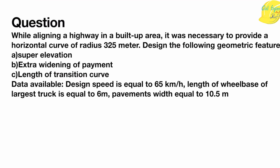Here is a practice question: while aligning a highway in a built-up area, a horizontal curve of radius 325 m is provided. Design the super elevation, extra widening of the pavement, and length of the transition curve, given design speed = 65 km/h, wheelbase of largest truck = 6 m, and pavement width = 10.5 m. Submit your answer and ask in the comment section if you have any doubts. That was all about the setback distance of the horizontal curve — do more numericals to solidify the concept.